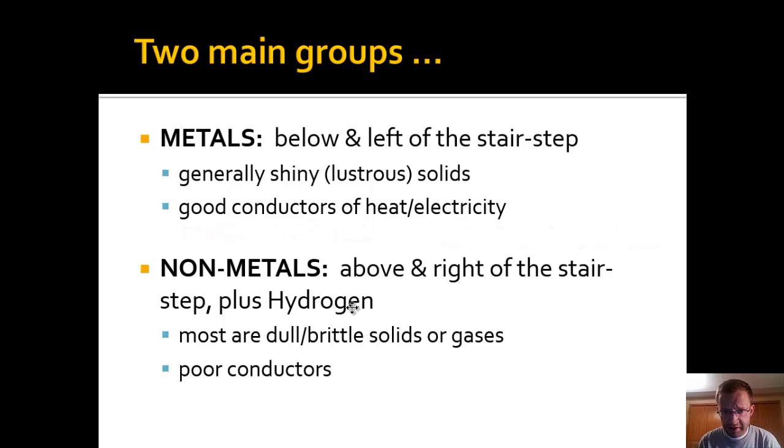Non-metals are above and right of the stair-step line, plus the element hydrogen. Important not to forget hydrogen. He's kind of over there in no man's land, but he's a non-metal too. Non-metals, in terms of their properties, are exactly the opposites of metals, basically. They tend not to be shiny, they're dull. They tend not to be very malleable or ductile. You can't pound them into thin sheets. You can only break them. You hit them with a hammer, so they're very brittle. At room temperature, many of them are gases. Some are solids. And there's one liquid there too, and that's bromine. They are not good conductors. The word we use for that is insulators.